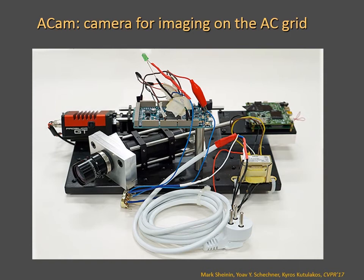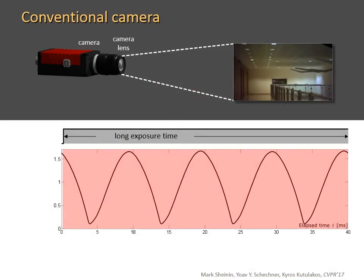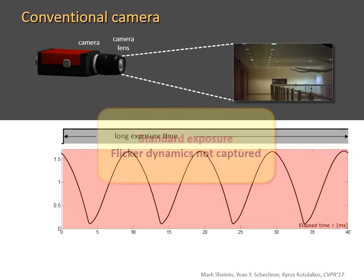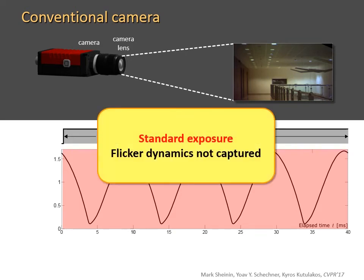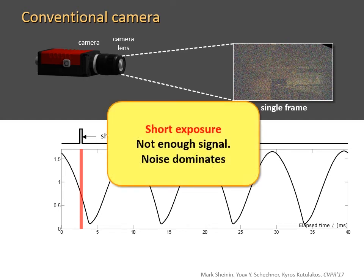We designed a novel camera called the A-cam to capture scenes under flickering illumination. To capture the scene during the night, a conventional camera shutter must remain open for one fifth of a second to allow enough light to reach the sensor. But such a long exposure cannot detect the flicker dynamics. To capture the flicker dynamics, there is a need for an exposure time that is a fraction of the flicker cycle, marked here in red, if a conventional camera was used. But having such a short exposure, the resulting photo would be very noisy, because not enough light would reach the sensor.